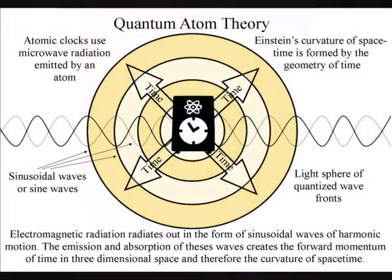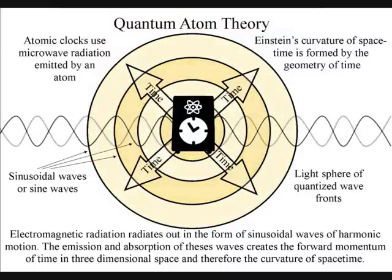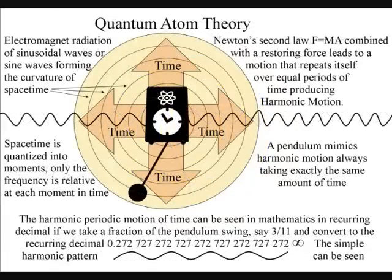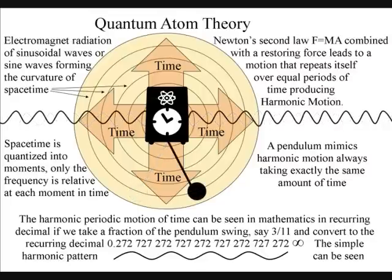If we look at the way we measure time using an atomic clock, it is by measuring electromagnetic radiation in the form of microwaves. Even a traditional pendulum clock will mimic the motion of electromagnetic radiation, keeping perfect time.